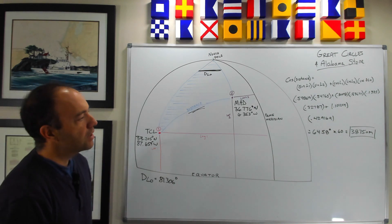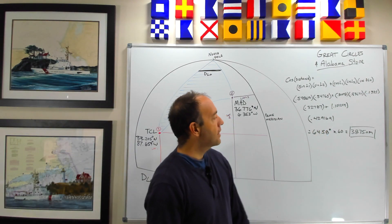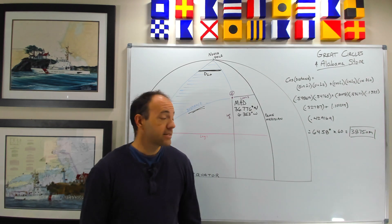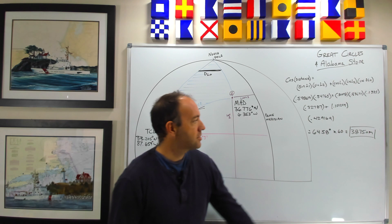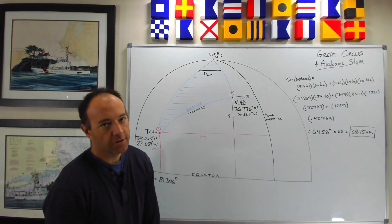All right, and then what we do at the very end is we multiply the value that we get for distance, which is in degrees, 64.58 degrees times 60 miles per degree. And that gives us our distance of 3,875 nautical miles.